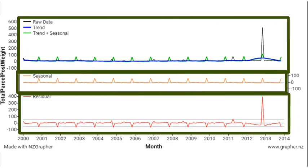And then in the third graph down the side is our residual leftover. So there are our three parts: the trend line, the seasonal component, and the residual. These are the three main components.